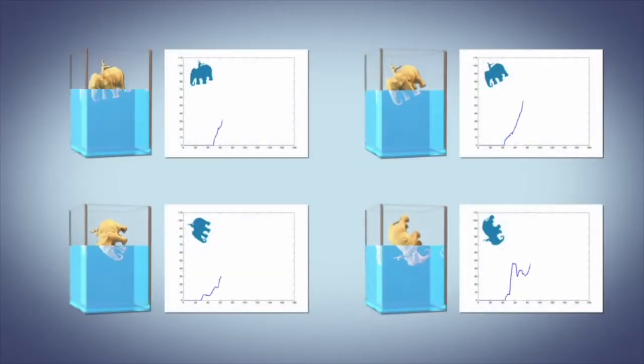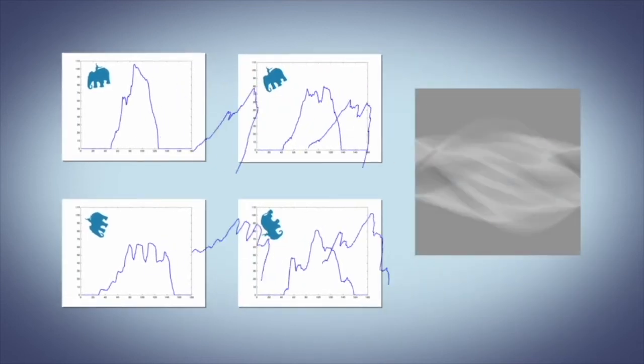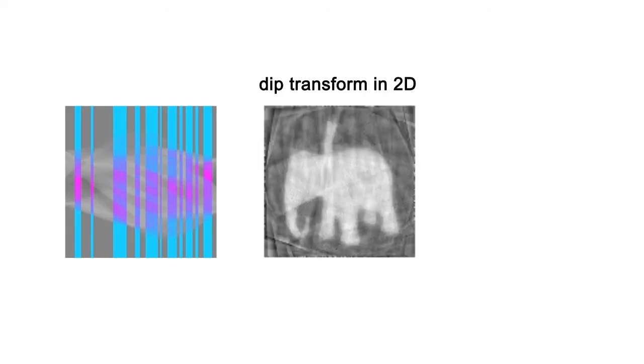By repeatedly dipping the object at various angles, we generate many volumetric displacements. Then we reconstruct geometry through what we call dip transform.